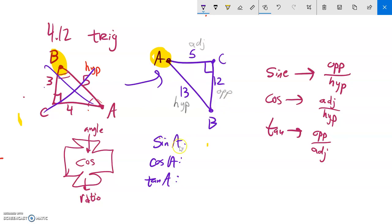So sine of angle A. So angle A, I plug it into sine. Remember, it spits out a ratio. And that ratio is opposite over hypotenuse. So opposite over hypotenuse, 12 thirteenths. Cosine of A spits out adjacent over hypotenuse, 5 thirteenths. Tangent of A spits out opposite over adjacent, 12 fifths.